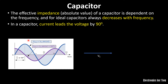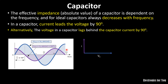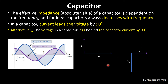In the phasor diagram, if voltage is the reference, the current is leading in the anti-clockwise direction. Alternatively, we can say that in a capacitor, voltage lags behind the current by 90 degrees. So if current is the reference, voltage lags by 90 degrees. We will use all this basic knowledge in our RLC circuit analysis.